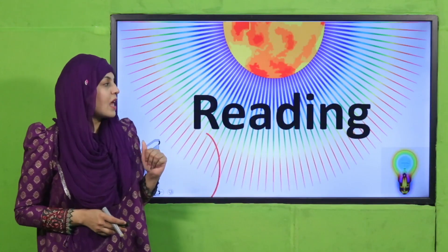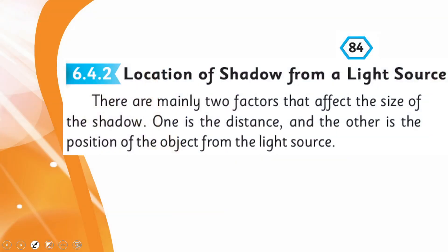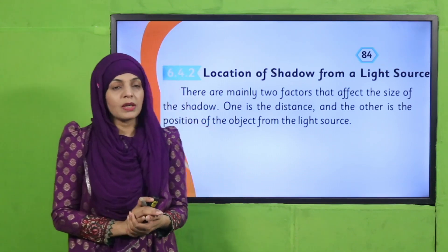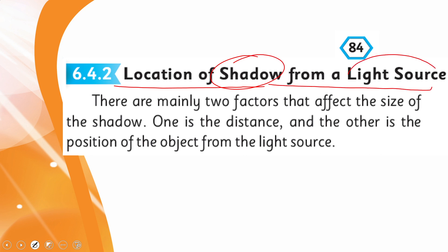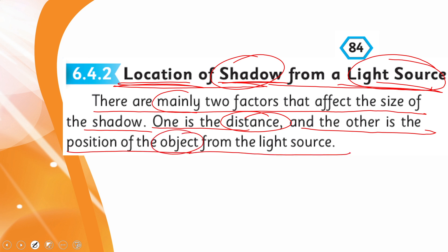Now let's move forward to the reading. Please open page 84 in your Science 5 books. Put your fingers where I read. 'Location of shadow from a light source' — that is, what is the location of the shadow according to the light source. There are mainly two factors that affect the size of the shadow: one is distance, and the other is the position of the object from the light source.